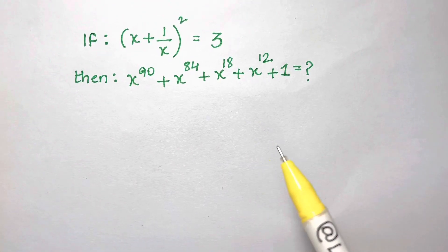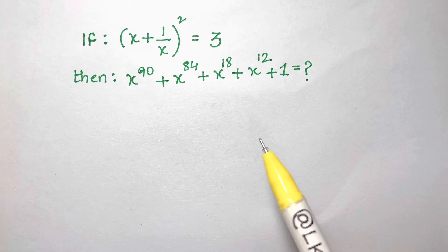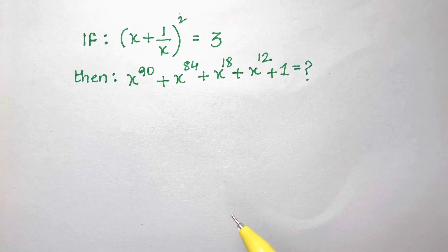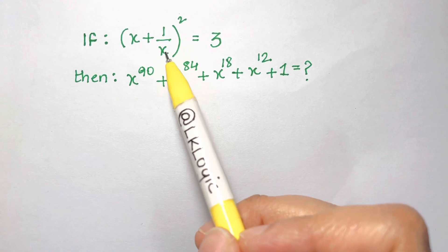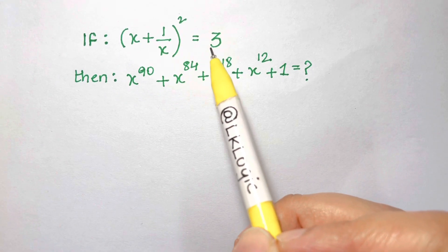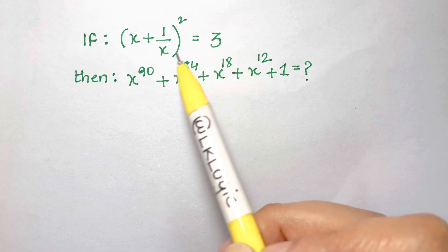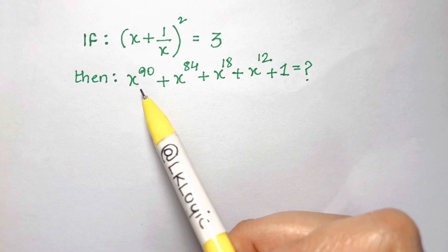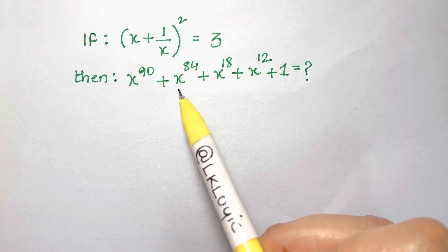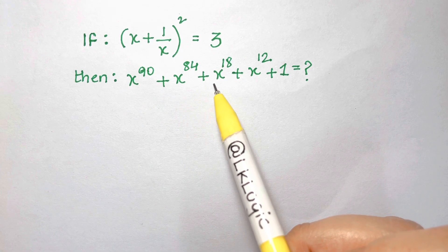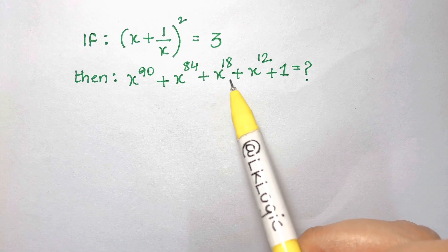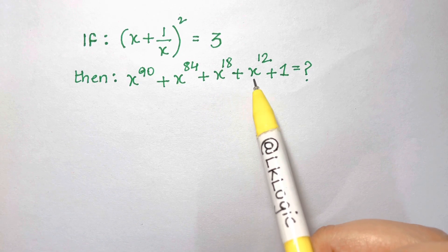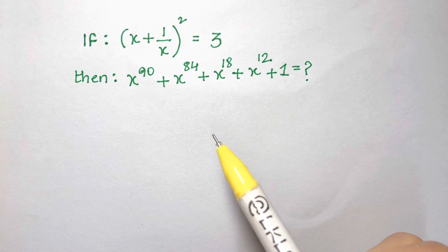This question has a miraculously interesting solution. If (x + 1/x)² equals 3, then x⁹⁰ + x⁸⁴ + x¹⁸ + x¹² + 1 equals what?